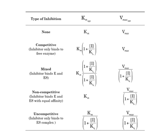To differentiate the types of inhibition, we compare their effects on KM and Vmax. Without inhibition, KM and Vmax are unchanged. For competitive inhibition, KM is multiplied by the inhibition factor while Vmax stays the same. For mixed inhibition, both KM and Vmax are affected by the inhibition factor. For non-competitive inhibition, KM remains unchanged but Vmax is divided by the inhibition factor. For uncompetitive inhibition, both KM and Vmax are divided by the inhibition factor. Use this comparison to differentiate between the types of inhibition.